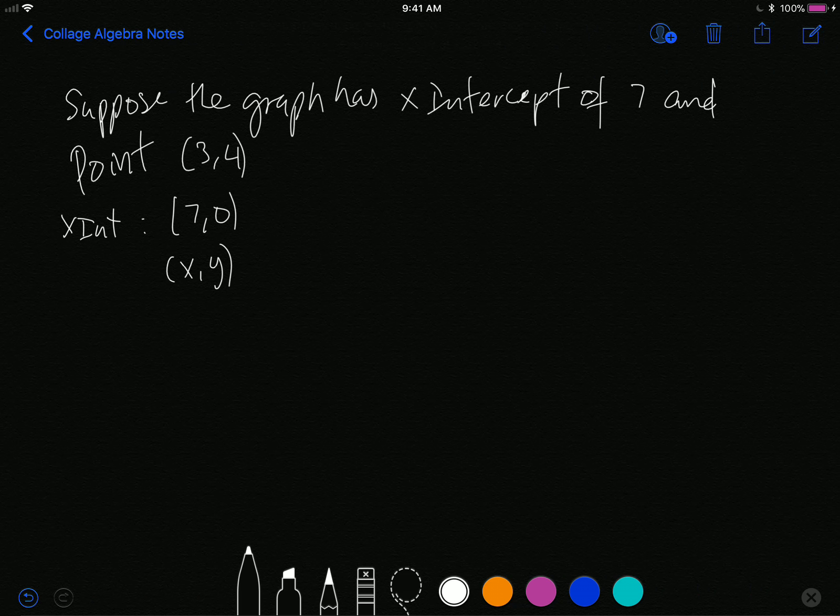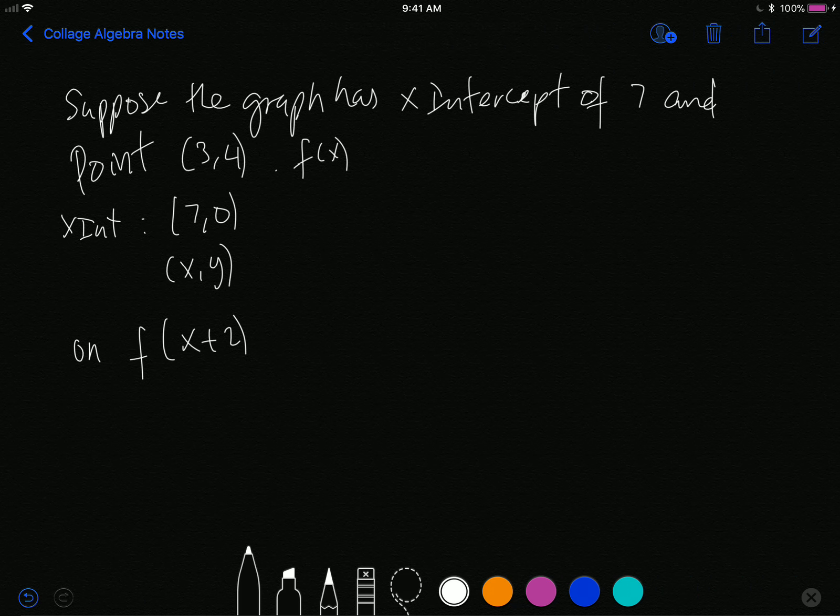Once you remember that fact, then you can look at the transformation and use that to help you answer the question. So they're saying suppose the graph has those points and they call the graph f(x). And then they say the new point on f(x+2) will be what?